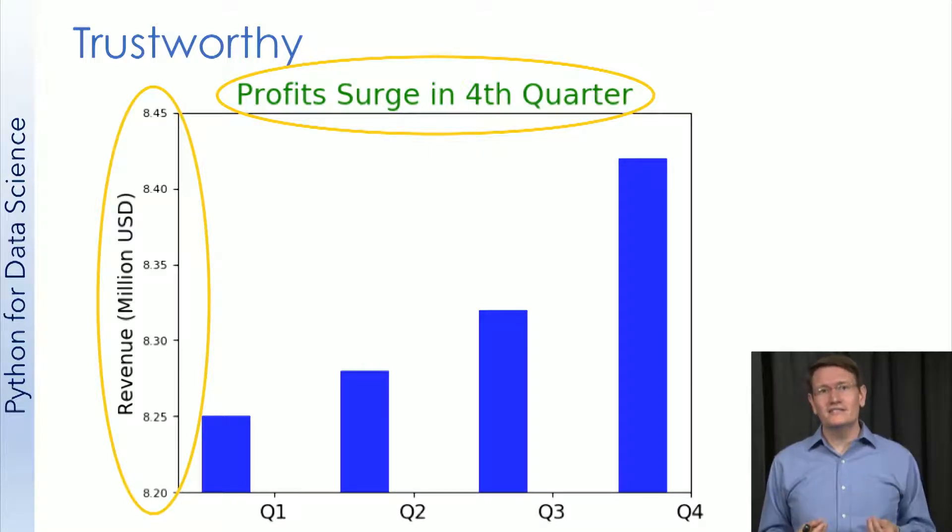We already mentioned that the y-axis is being zoomed in to exaggerate the growth between Q1 and Q4, but did you notice how the font size on the y-axis seems to have been made intentionally small just so it's hard to read?